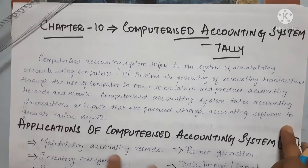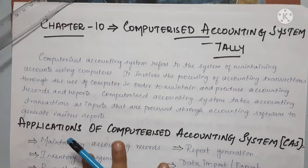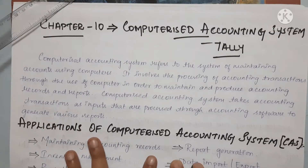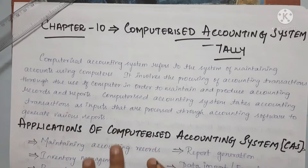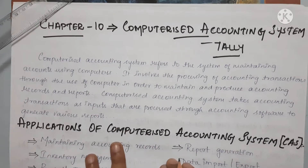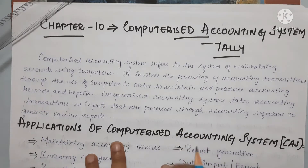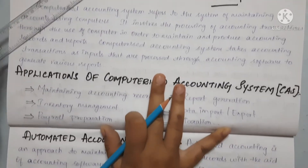Computerized Accounting System takes accounting transactions as input, which are processed through accounting software to generate various reports. The input includes transactions such as journal entries, and from there we can develop other reports using the software.